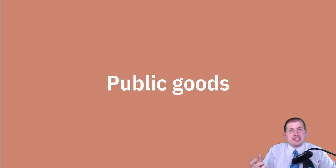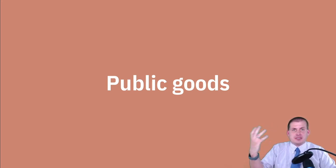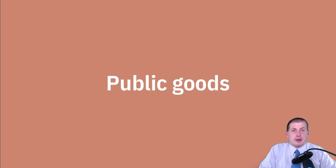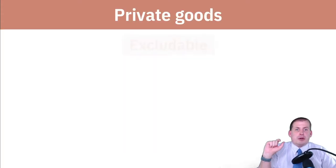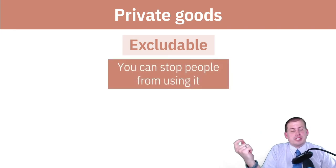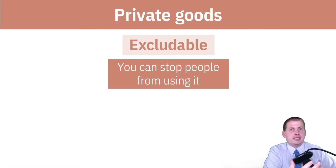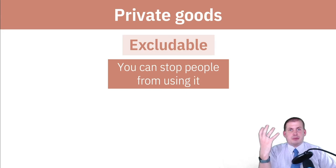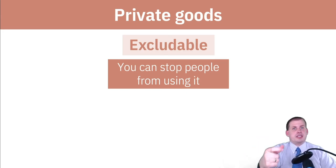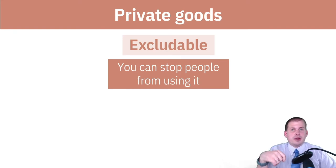In economics, a good is something you can buy or sell — a service, a product, something that can be traded in a market. There are specific types of goods. Private goods meet two specific requirements. A private good is excludable, which means you can stop people from using it. If you sell somebody a piece of candy, them consuming that candy means other people can't consume it too.